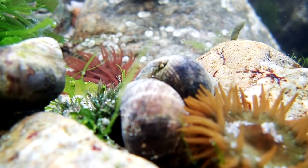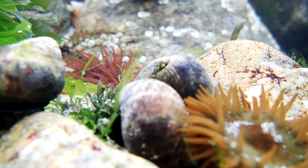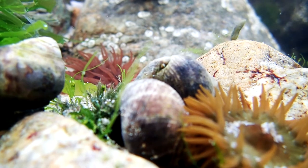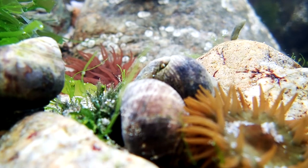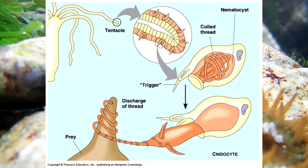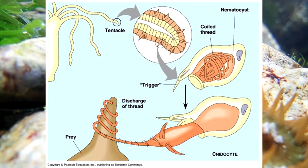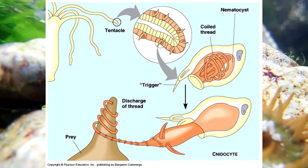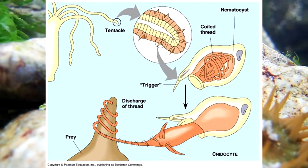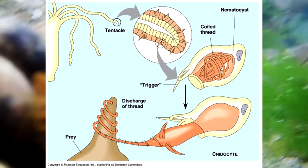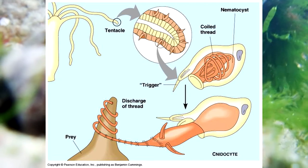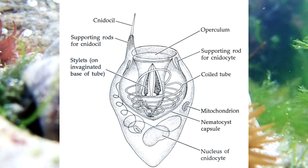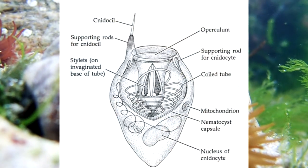Nematocysts, or the stinging cells that cnidarians often have, are what we refer to as the taxon-defining feature of cnidarians — which essentially means cnidarians are the only animals that have these. So if you find a new animal and you're trying to figure out where it fits in the phylogenetic tree of life, and it happens to have nematocysts, it's probably a cnidarian. Nematocysts aren't technically cells, but it's much easier to refer to them as stinging cells. Essentially, a nematocyst is a barb that's coiled up like a spring, ready to be released upon whatever touches it.